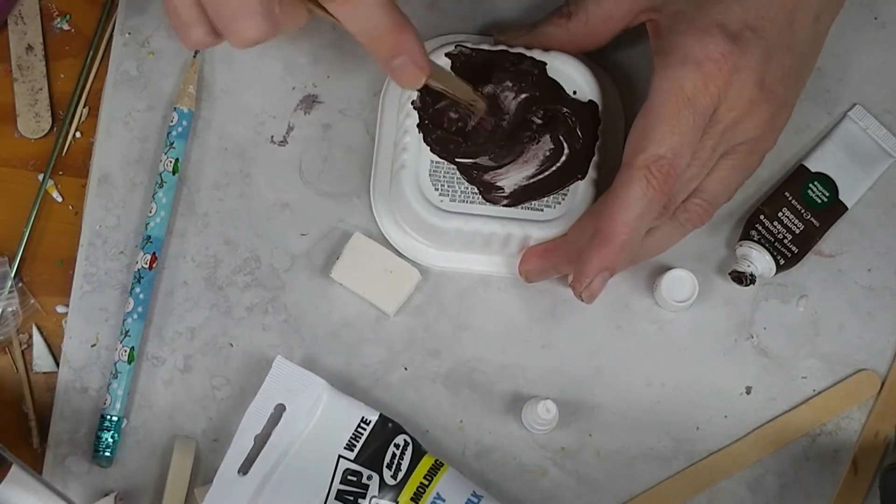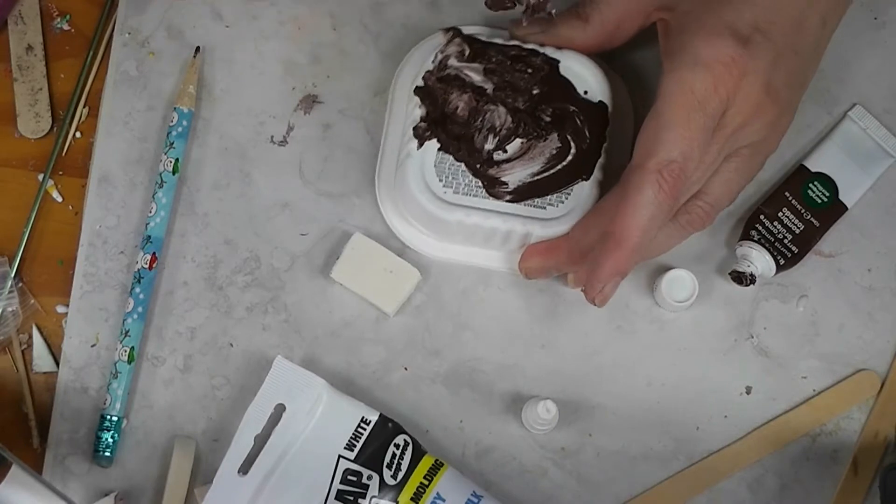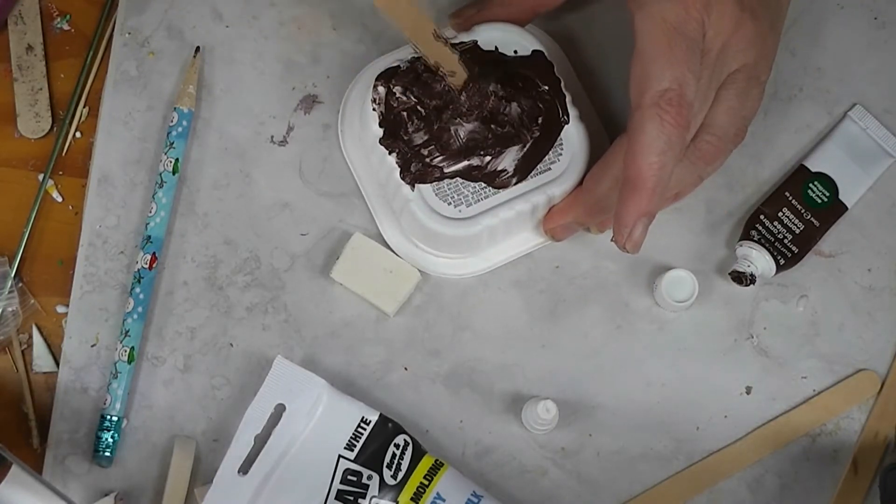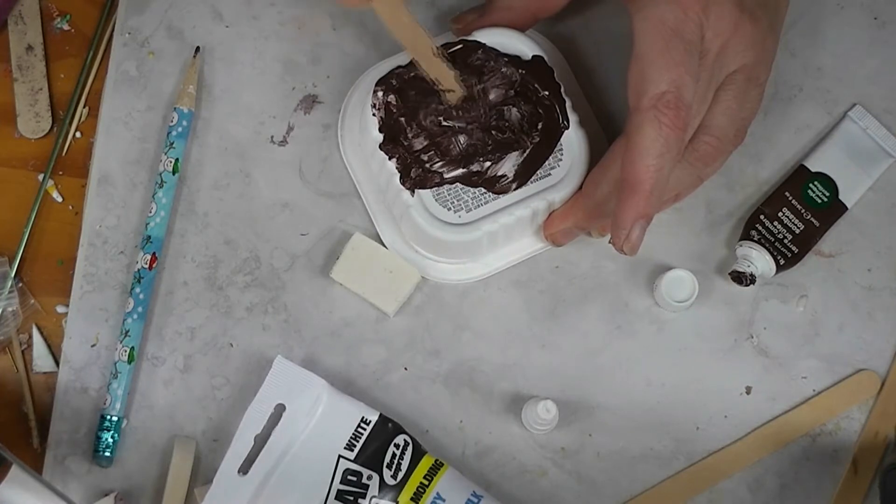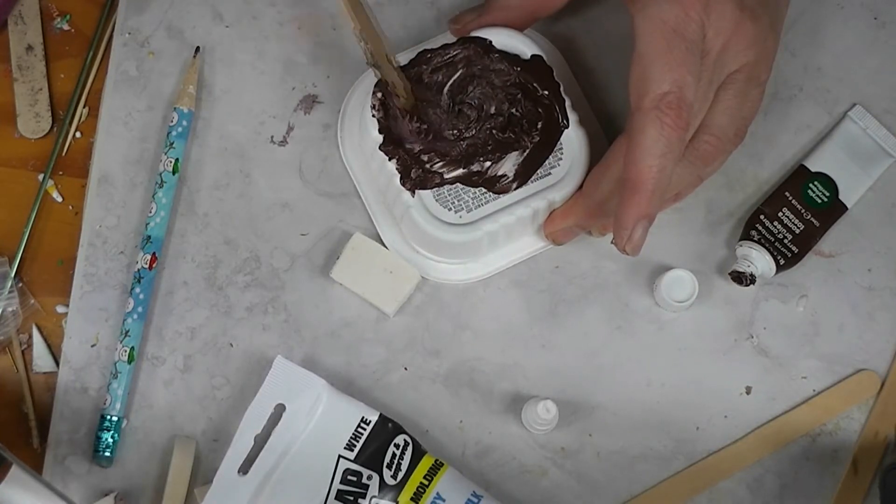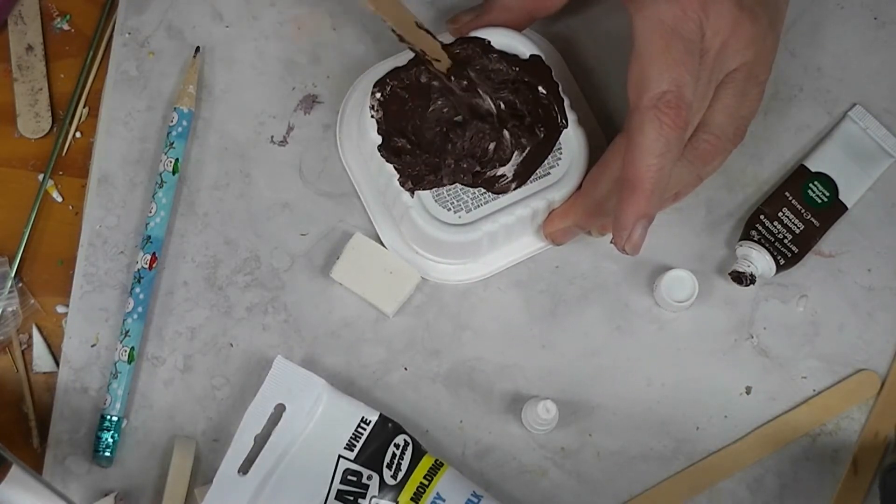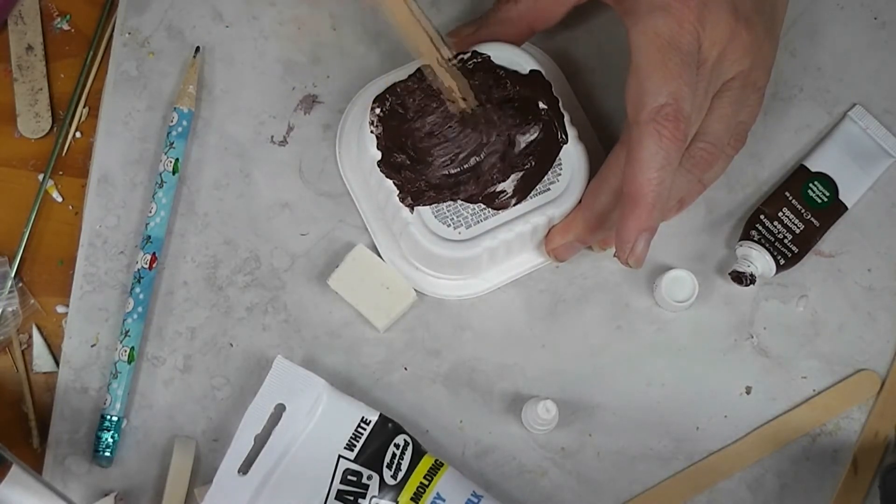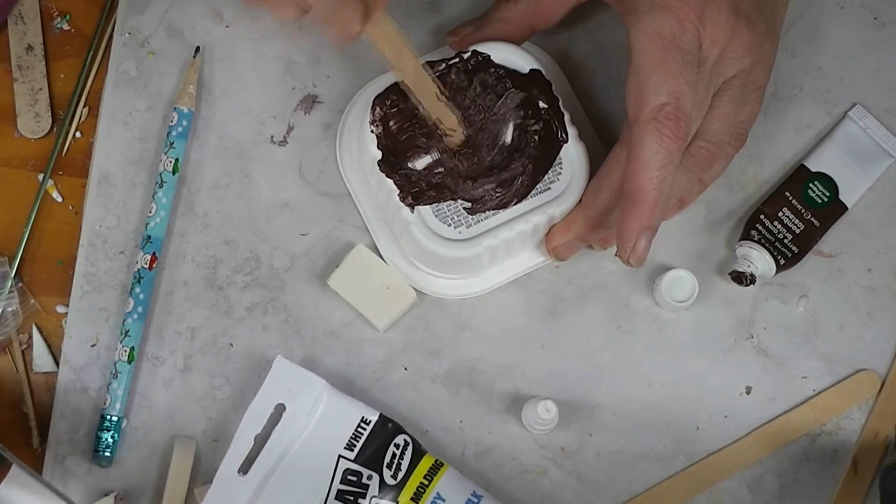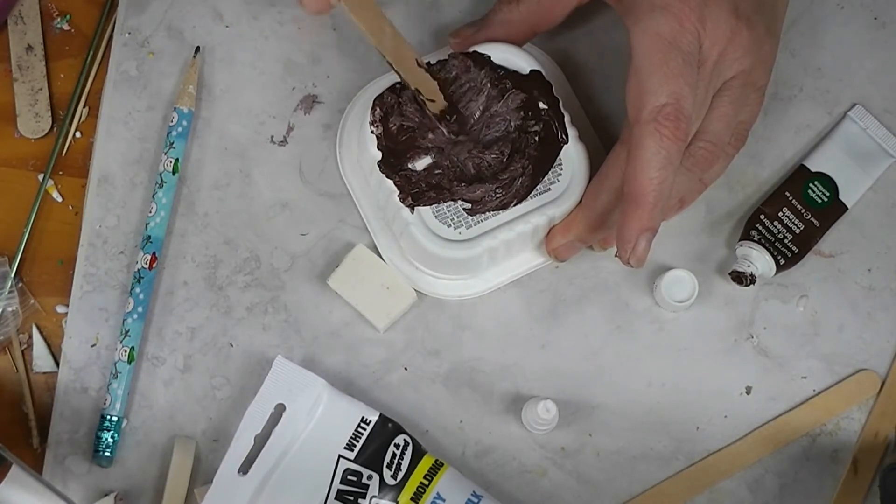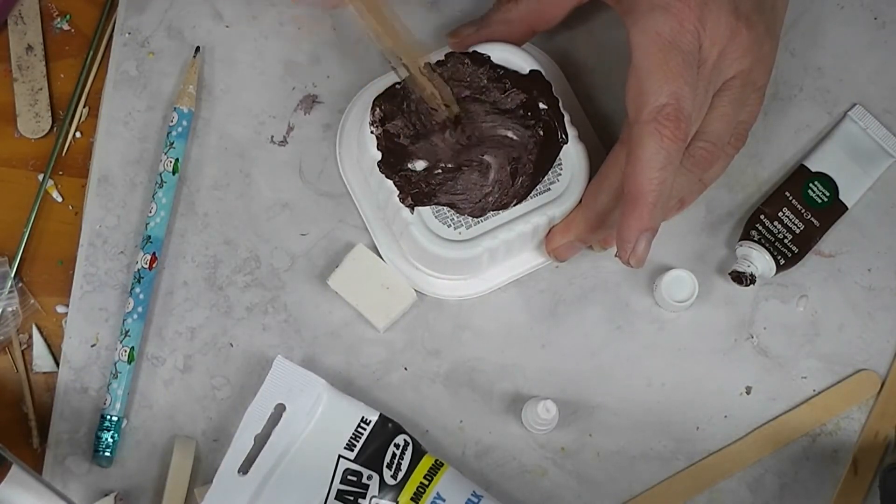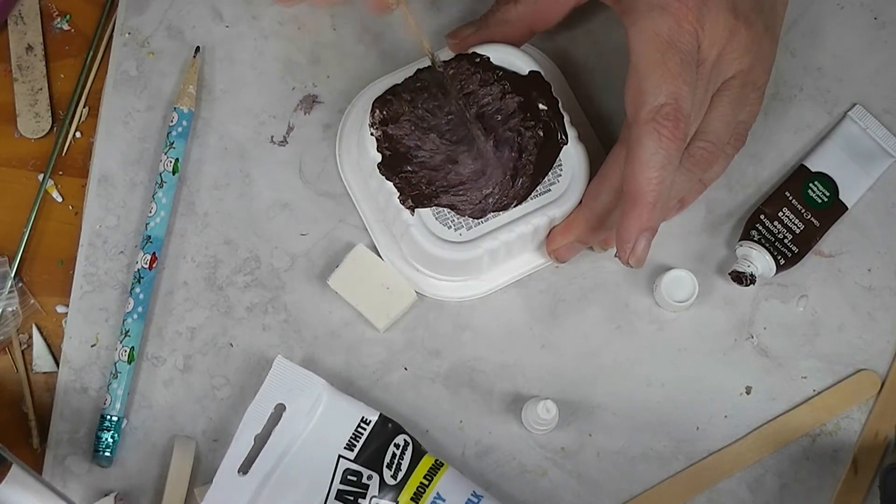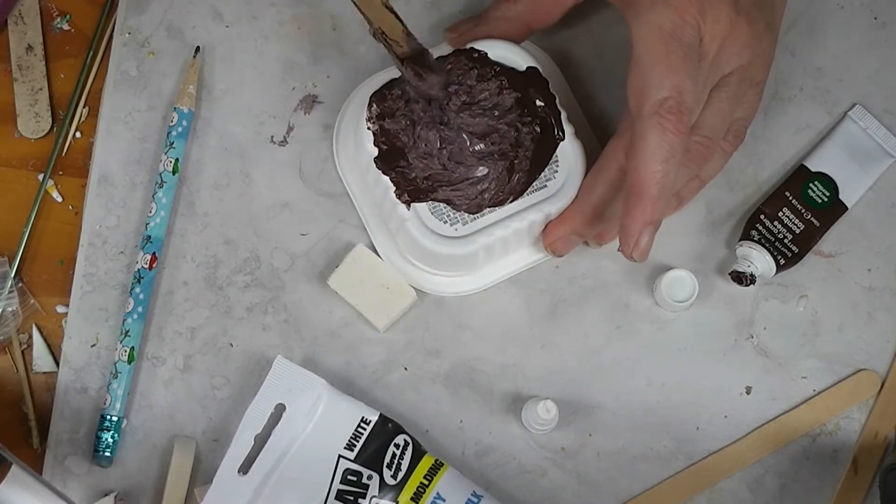I prefer tube acrylic paints to color the caulk because it doesn't thin it down as much. If you put in enough craft acrylic you can do it with craft acrylic, but when you do it loses a lot of its thickness and then you end up with frosting that doesn't really look like frosting. That's a decent color. I think that'll do.